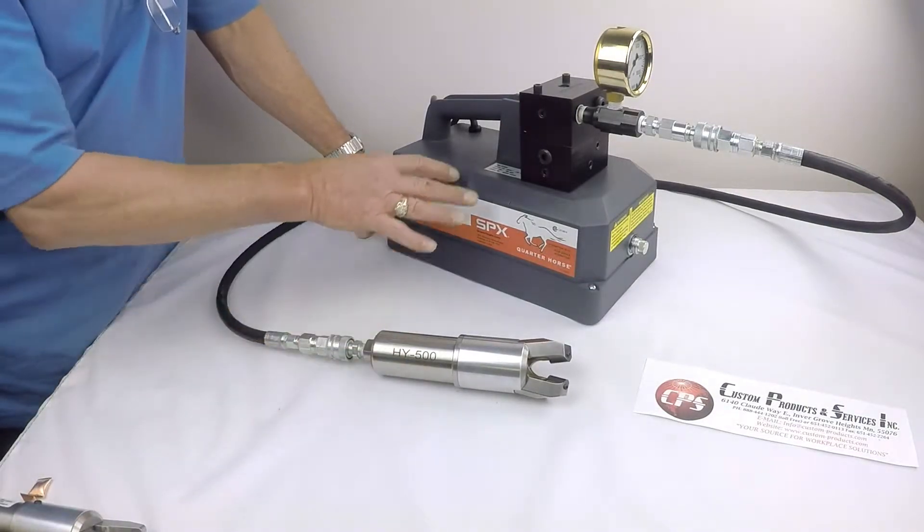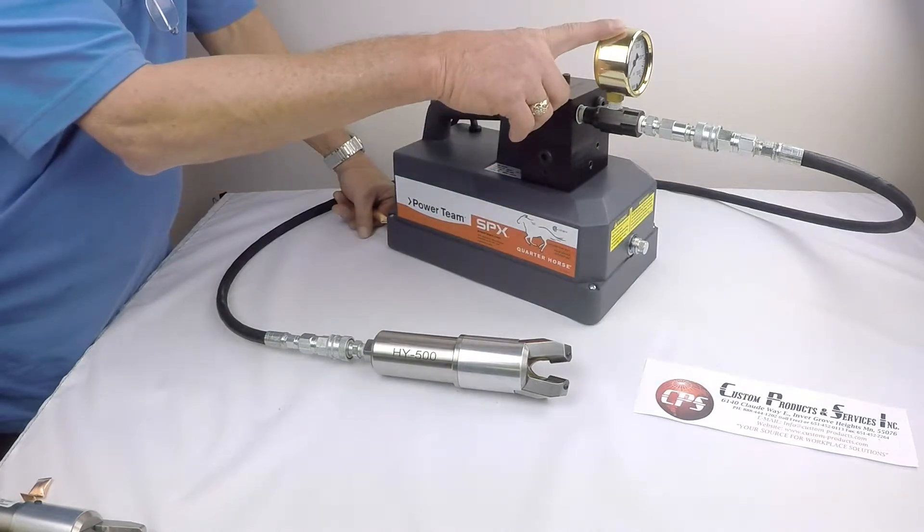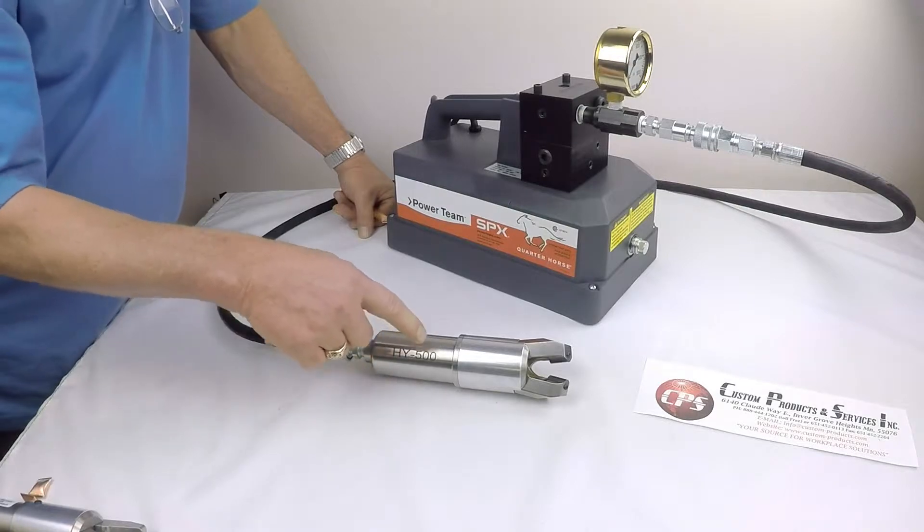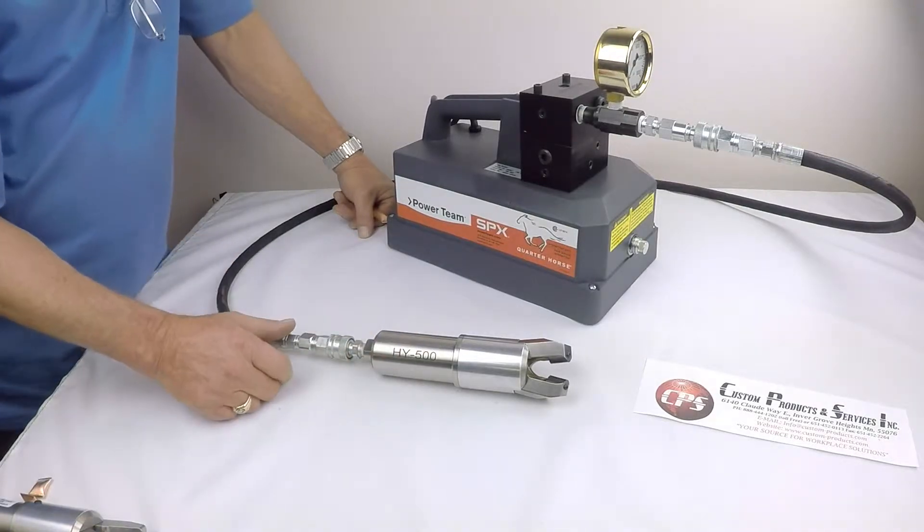It comes equipped with a pump setup, pressure gauge for the hydraulics, quick disconnects on both ends of your hydraulic hose, and a quick disconnect on the handset for easy on-off.